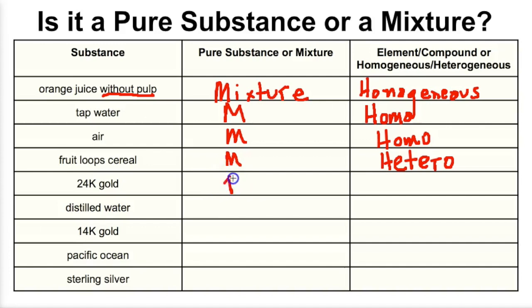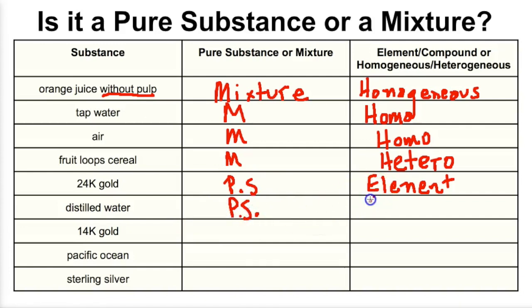24 karat gold — that's solid gold — that's going to be a pure substance, and that's going to be an element. Distilled water means that all the dissolved stuff has been removed basically, so distilled water should be a pure substance — and this is going to be a compound, pure H2O. 14 karat gold is an alloy — a mixture of a bunch of different elements — so that's going to be a mixture, and it's the same throughout, so we'll go ahead and put homogeneous.